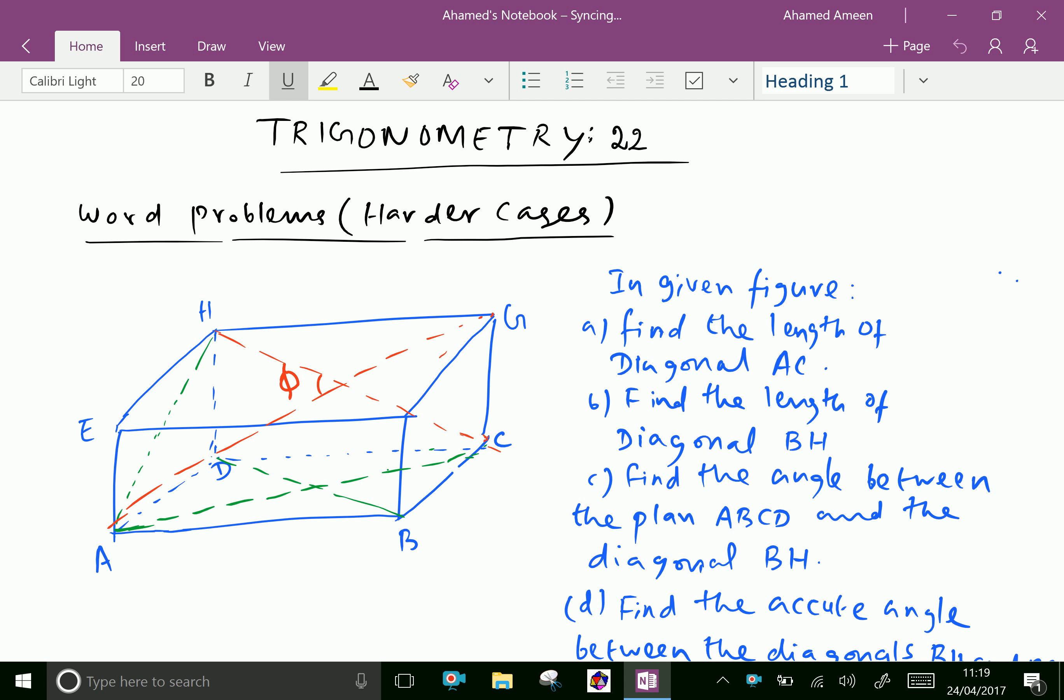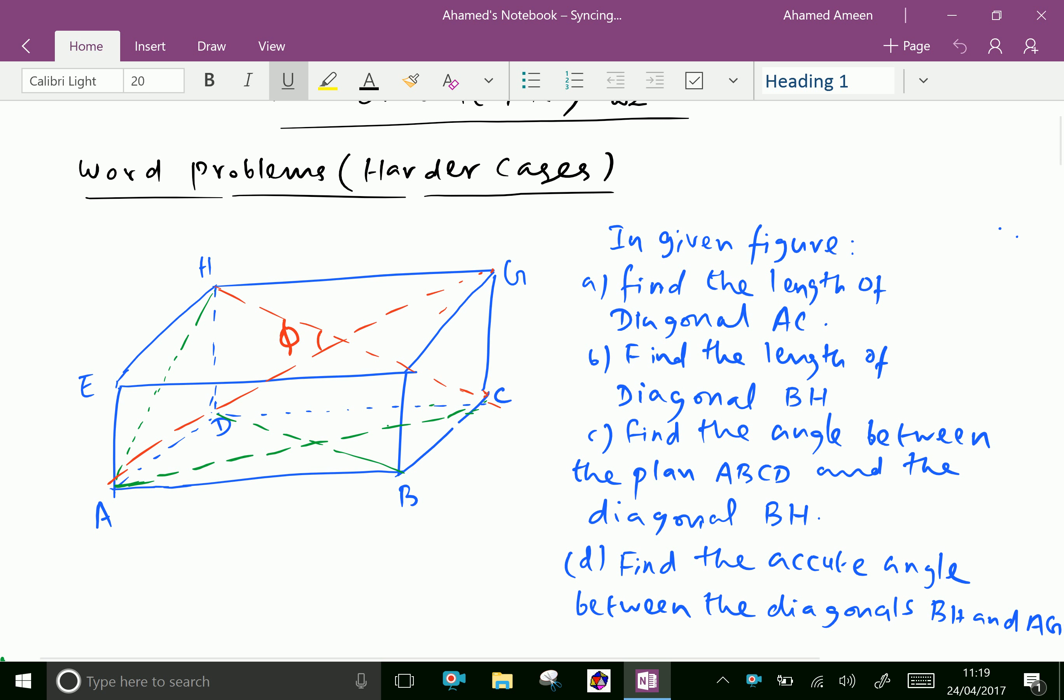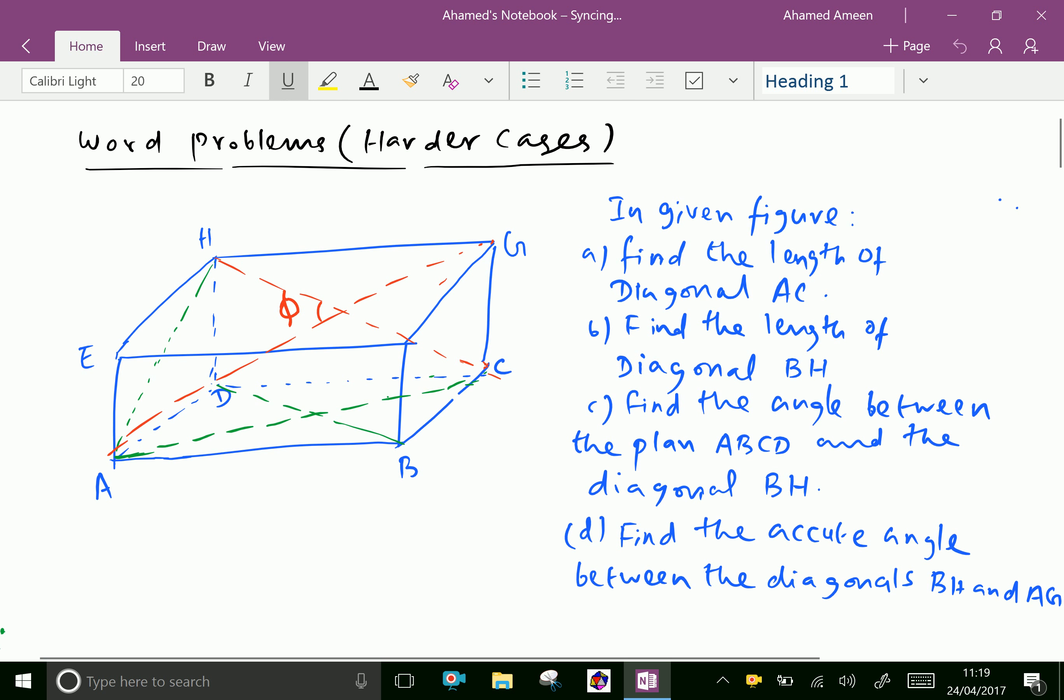In the given figure is a rectangular box. In this figure find: a) the length of diagonal AC, and b) the length of diagonal BH, the longest diagonal.